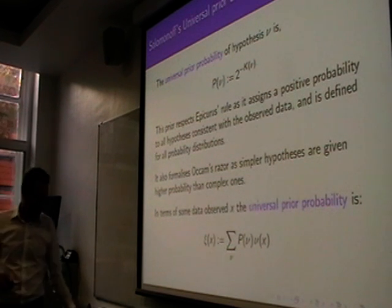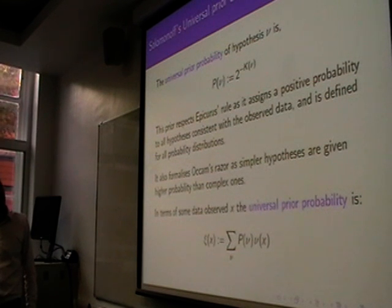So, it respects Epicurus' rule because anything that has a computable distribution is going to be finite here, so it has some positive probability. So, that's satisfied. And it formalized the Occam's razor. We've got the complexity is proportional, inversely proportional to the probability. So, we've formalized, we've come up with a prior that captures Epicurus' rule and Occam's razor.